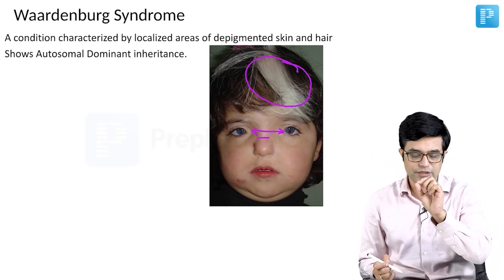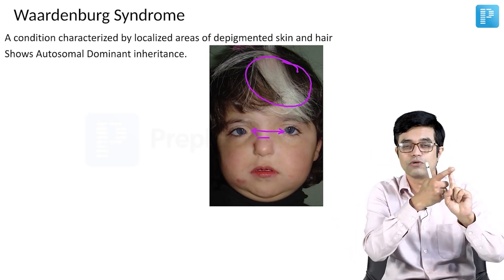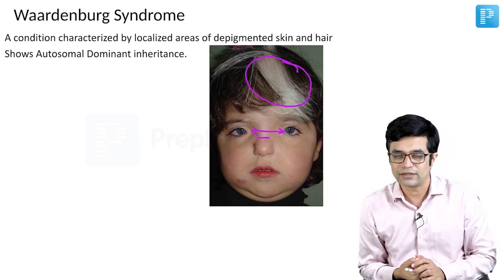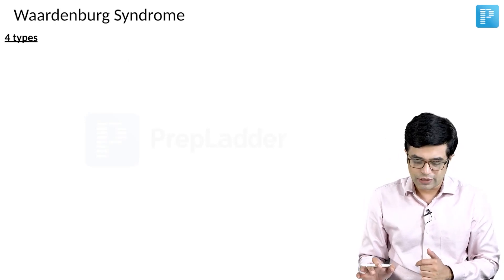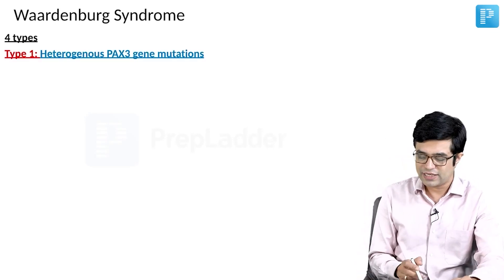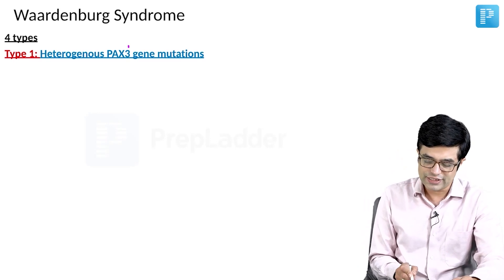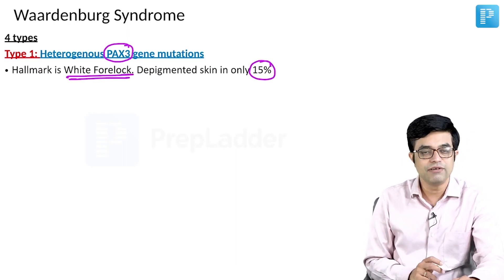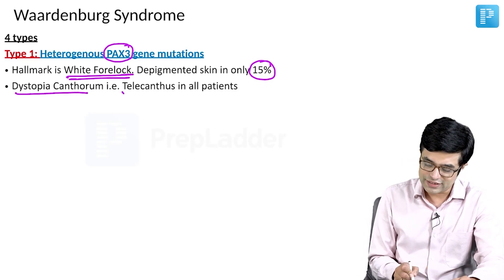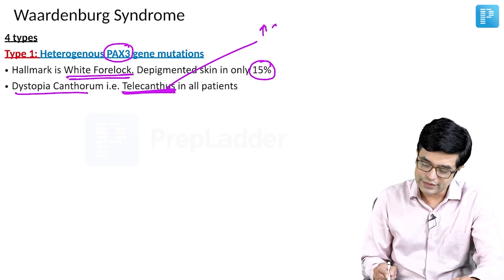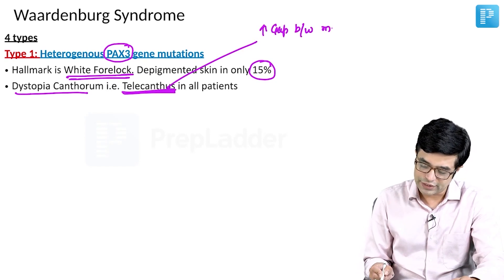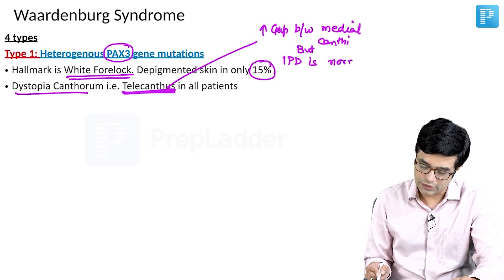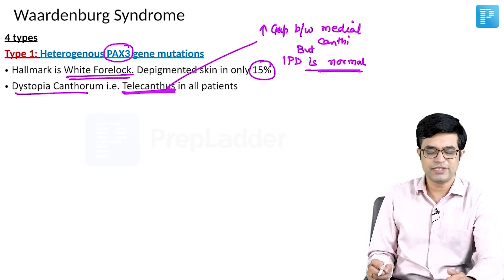When you find a patient of Waardenburg syndrome, you will look for white forelock and increased gap between the medial canthi. There are four types. Type 1 has heterozygous PAX3 gene mutations. It is characterized by white forelock. Depigmented skin is present in only 15% of cases. Dystopia canthorum — that is telecanthus — is present in all patients, with increased gap between the medial canthi of the two eyes. The interpupillary distance is usually normal.